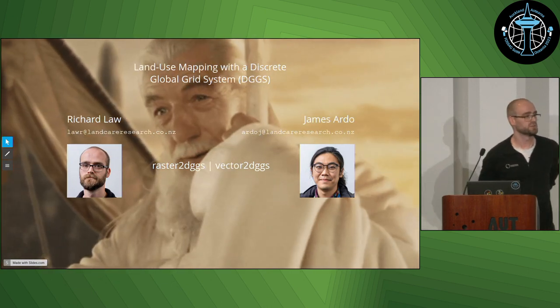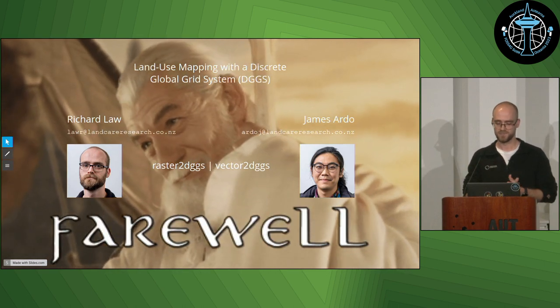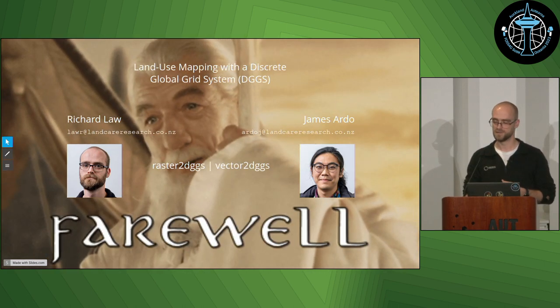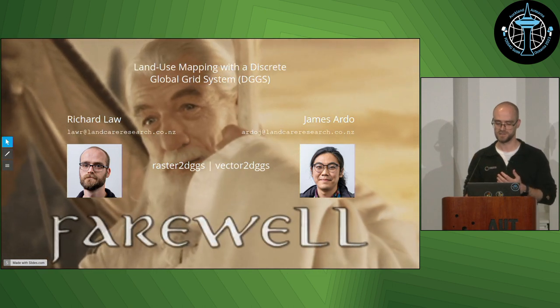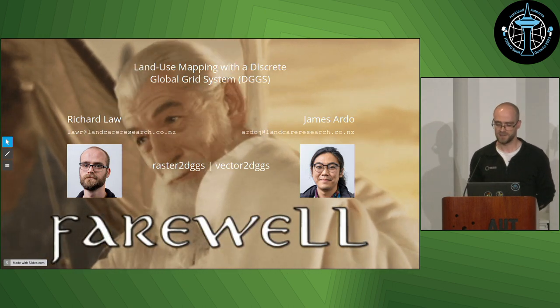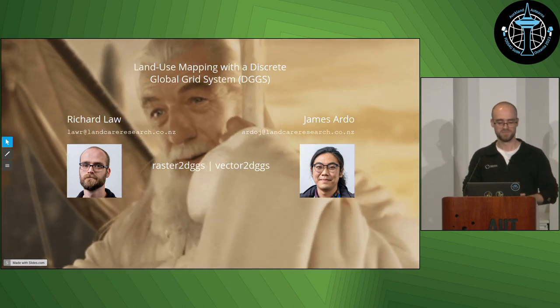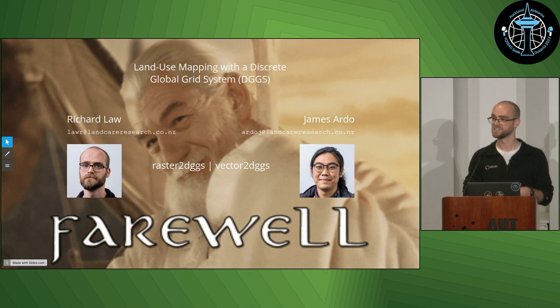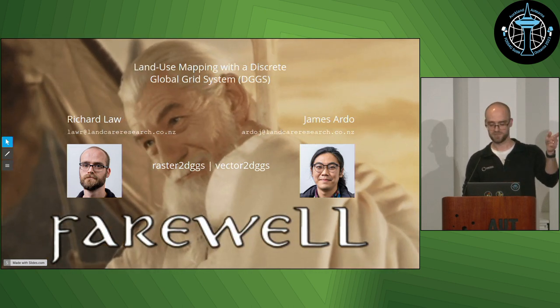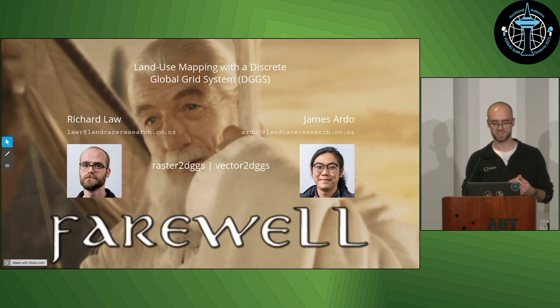I hope that I've introduced you to the idea of a DGGS without being too scary. Just to recap, I think it's most fruitful to think about it as a hybrid raster-vector data model for geospatial information. Those are the names of the tools you can try out on GitHub. I just want to quickly say thanks to all of the open source software developers out there — you literally make my job not just possible, but rather delightful. And I also want to thank James Ardo, who's at the conference and has put a lot of effort into these ideas and also these DGGS conversion tools specifically. Thank you very much.